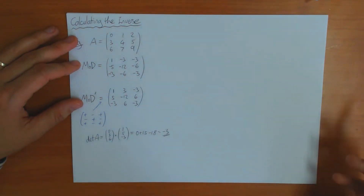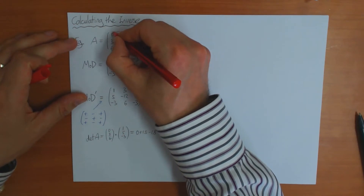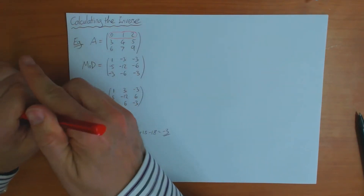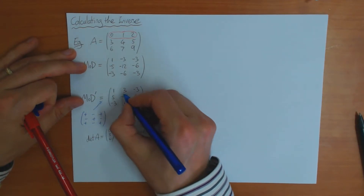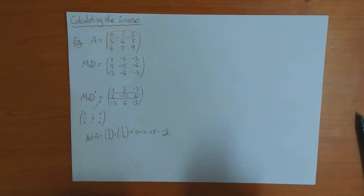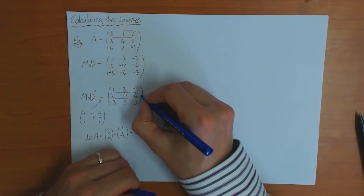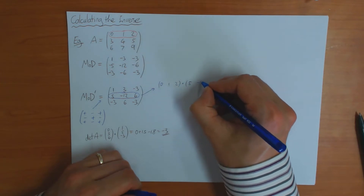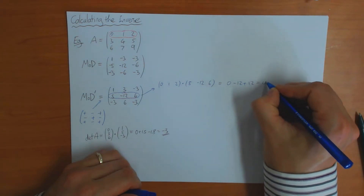What's interesting is what happens if you make a mistake and multiply the first row of A by a different row of MOD prime — instead of the matching row. If I multiply by the second row, I get 0, 1, 2 dot 5, -12, 6. That's 0 - 12 + 12, which is 0.